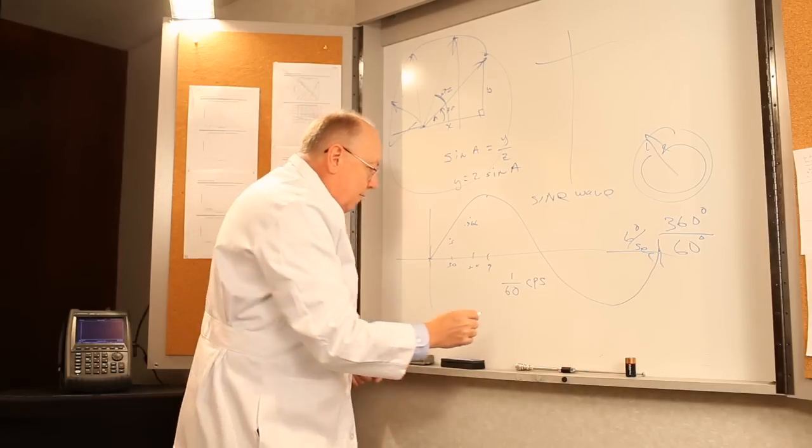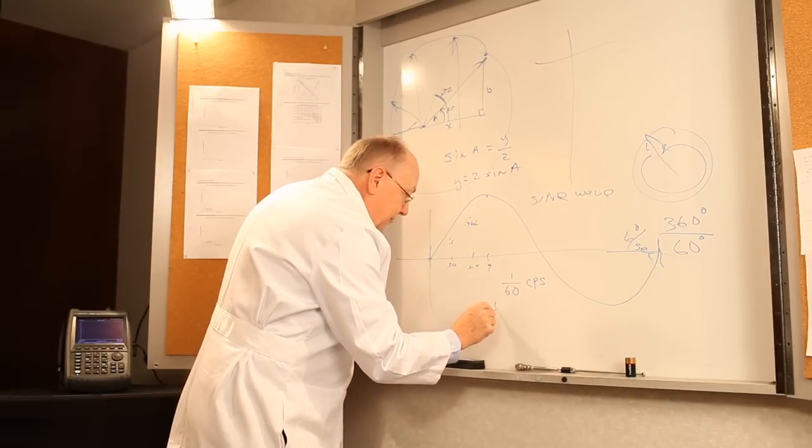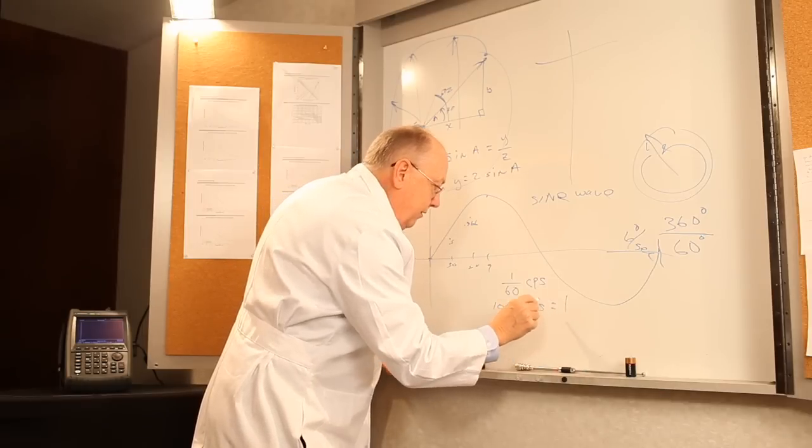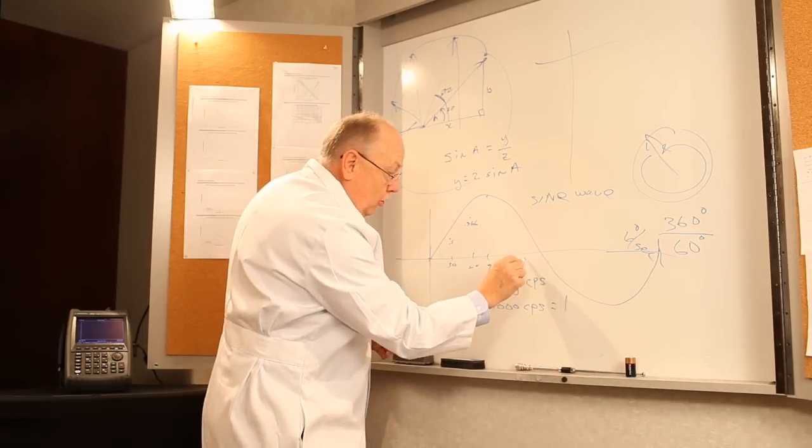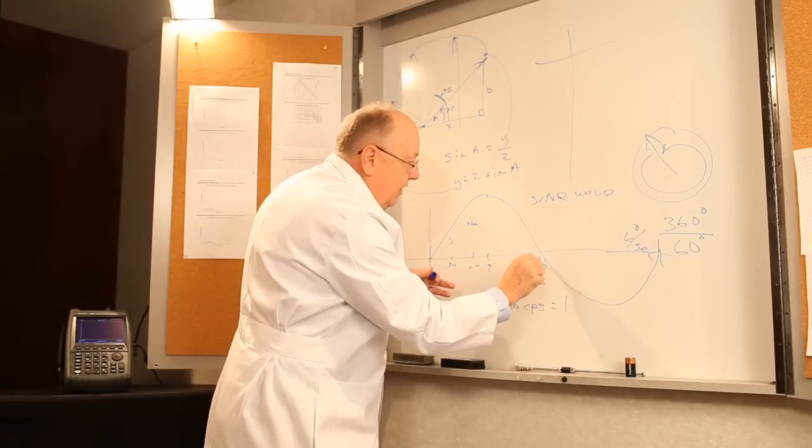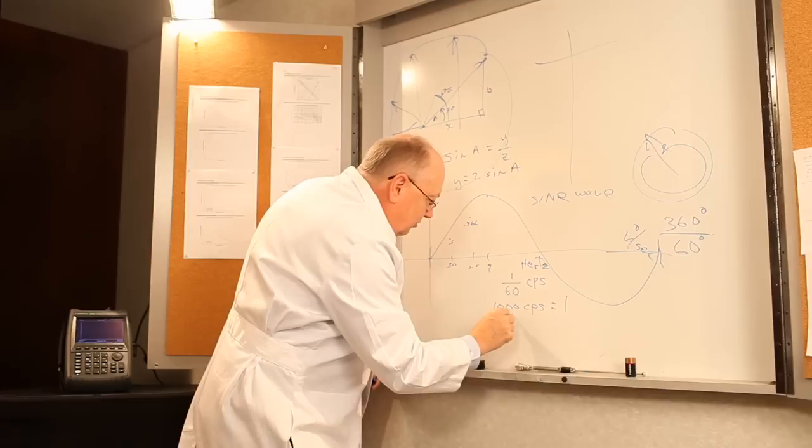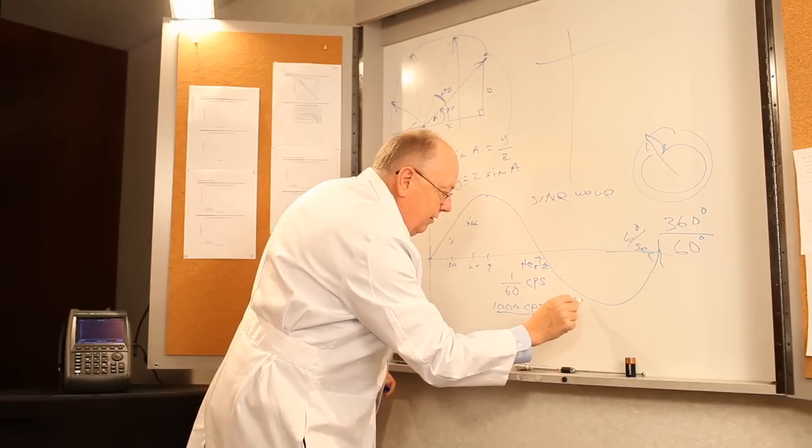We said that one cycle happened in 60 seconds, so that's 1/60th of a cycle per second, which is a very slow signal. But if you look at 1,000 cycles per second, a cycle per second is called a hertz, after some famous guy.